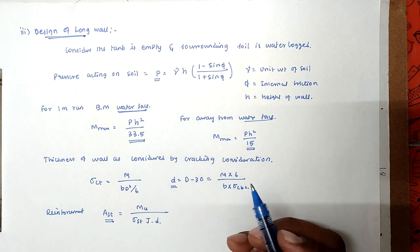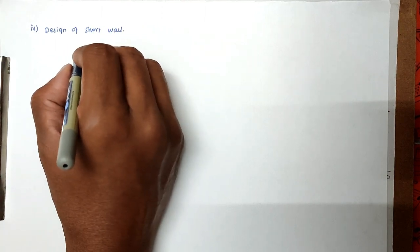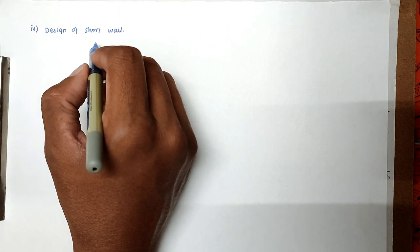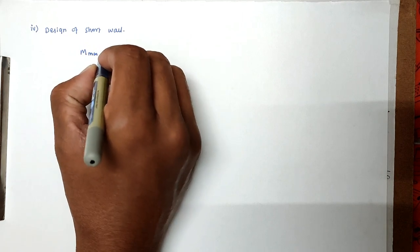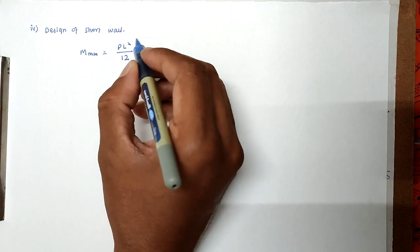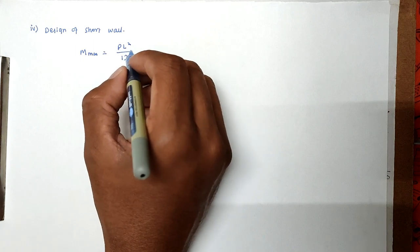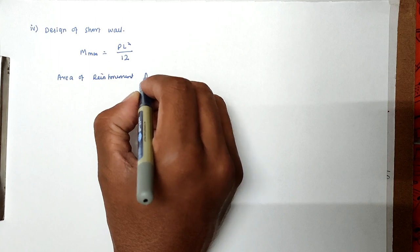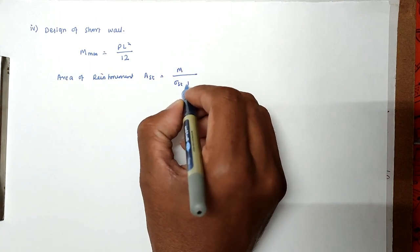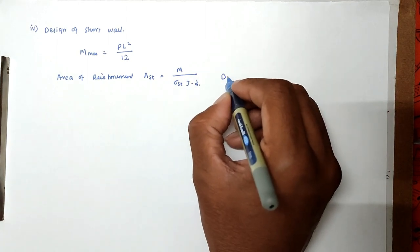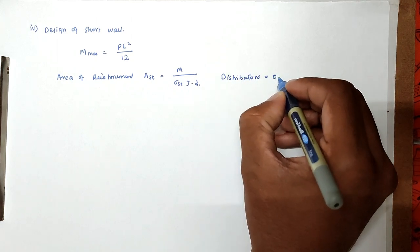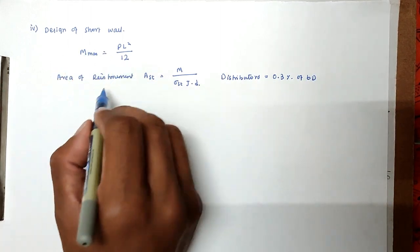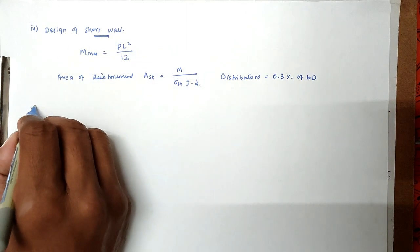Likewise, we can design the short wall. For the design of the short wall, we don't consider separate water phase and away-from-water-phase cases. The maximum bending moment M max is equal to P L squared divided by 12. Here we use P L squared instead of P H squared. The area of reinforcement uses the same formula: M divided by (sigma ST into J into D). The distributors are 0.3 percentage of B into D. We then provide the reinforcement for the short wall.